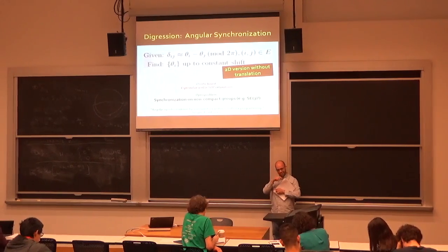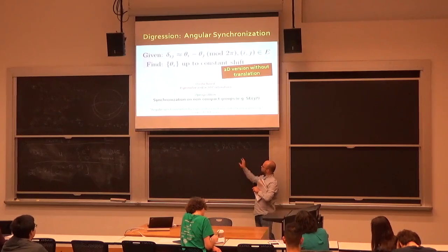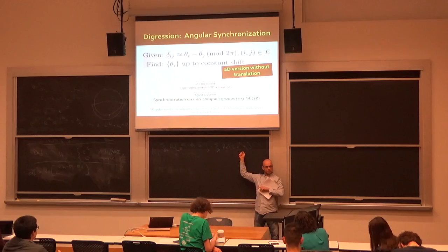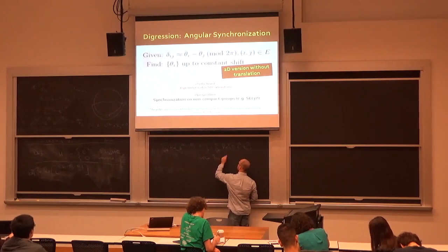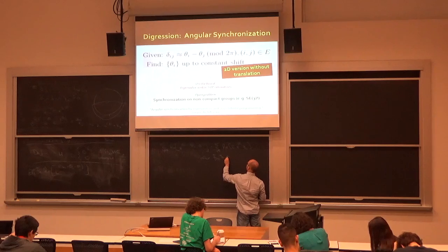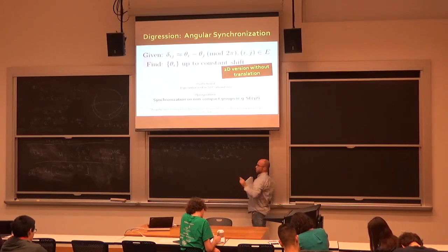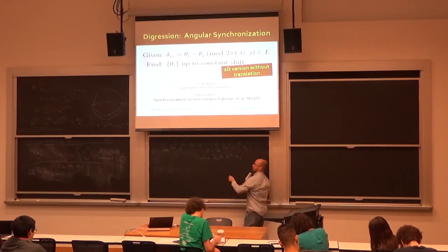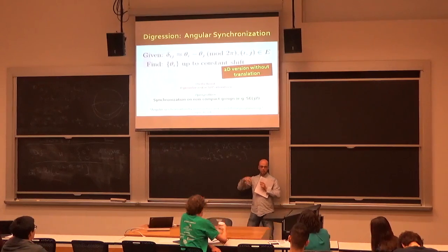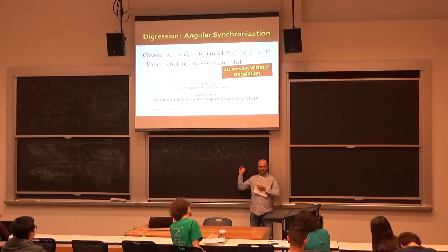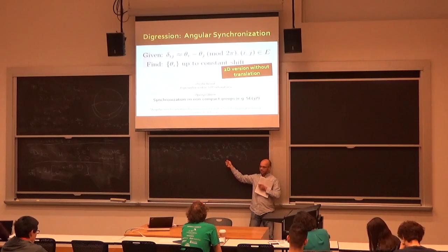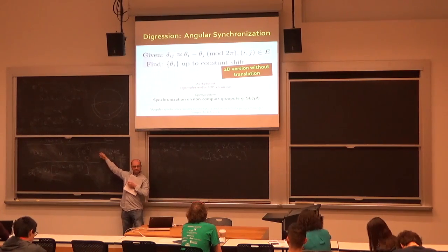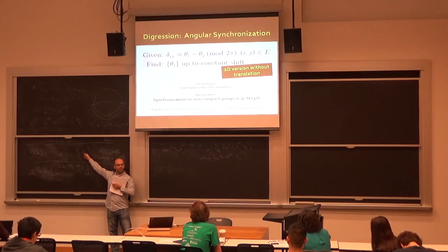So we want to maximize z† H z subject to |z_i| = 1 for all i. Unfortunately, this is NP-hard, because it has many unit norm constraints — one for each image. In fact, it's NP-hard to optimize with even three unit-length constraints. So we need a relaxation. When you relax a max problem by removing constraints, the feasible set grows and the objective can only get bigger — you're no longer guaranteed to get the original answer.